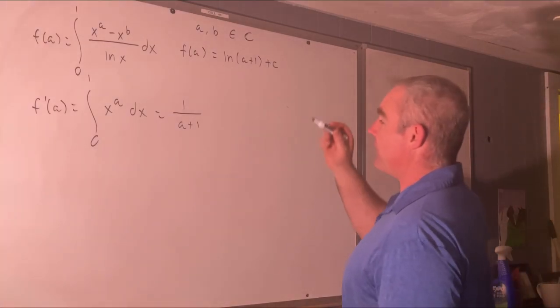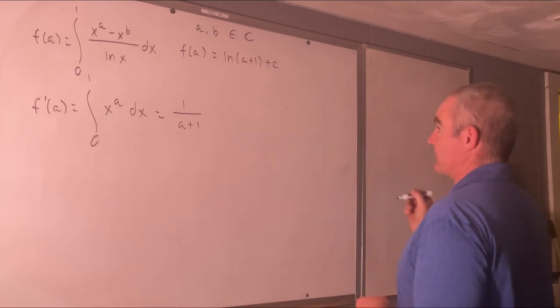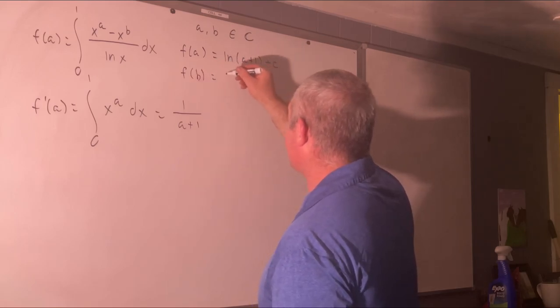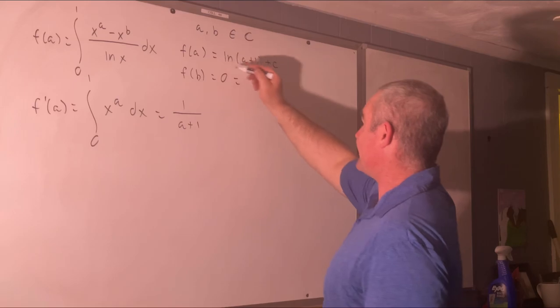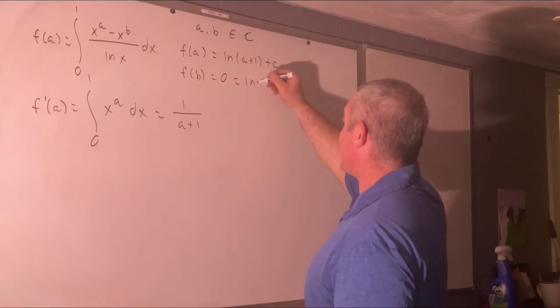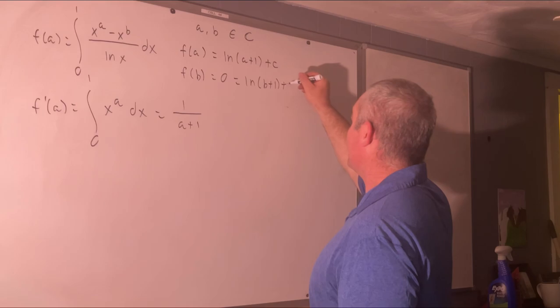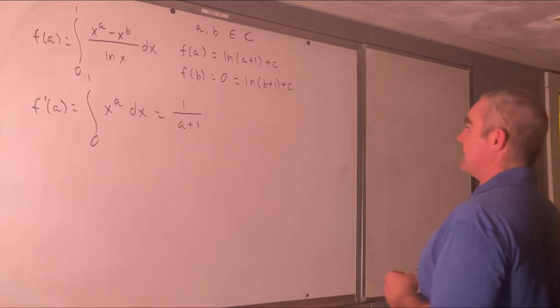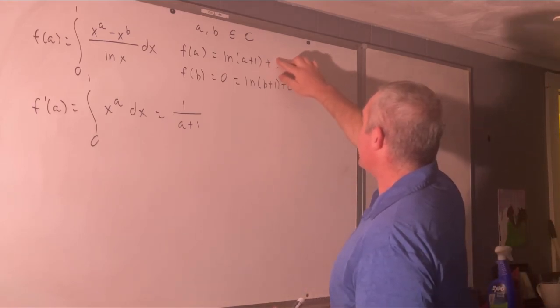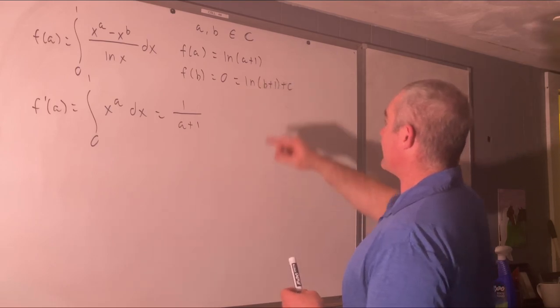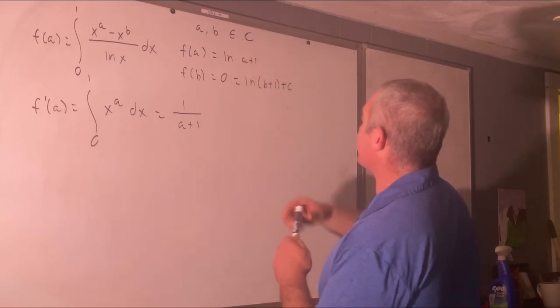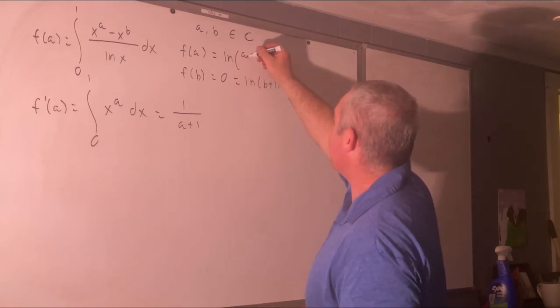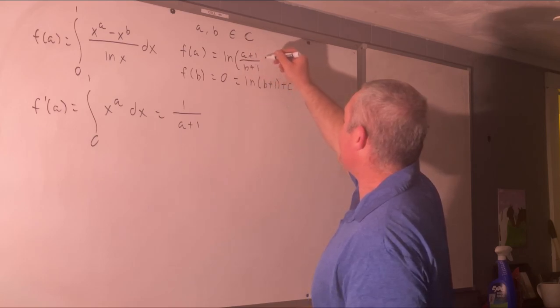So f of b is equal to 0 and it's also equal to this evaluated at b. So that's equal to the natural log of b plus 1 plus c. And this implies that c is equal to negative natural log of b plus 1. So our c is negative natural log b plus 1. We'll use the properties of logarithms to combine that into one natural logarithm like this: a plus 1 over b plus 1.